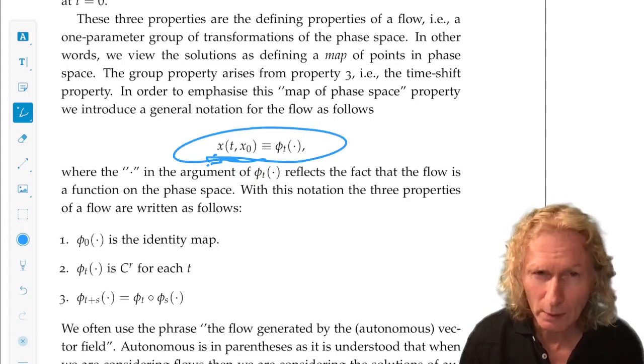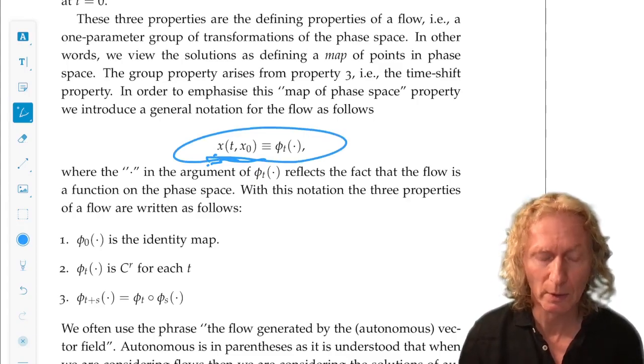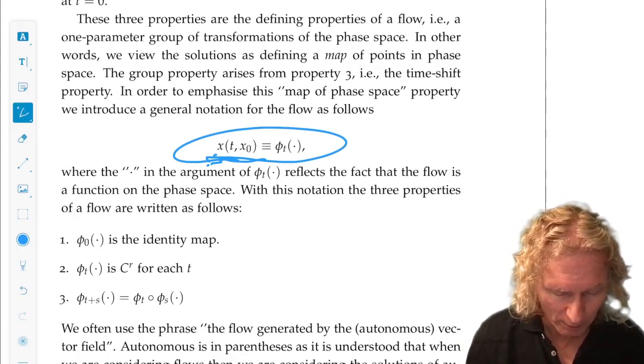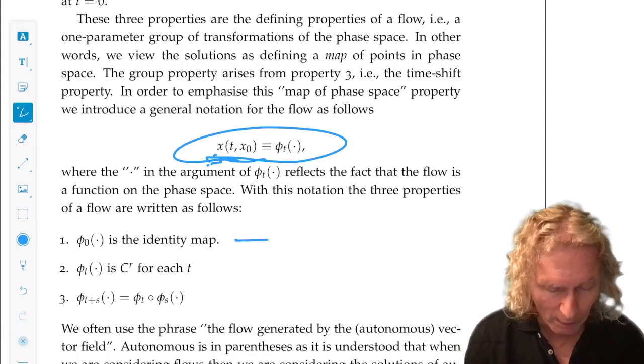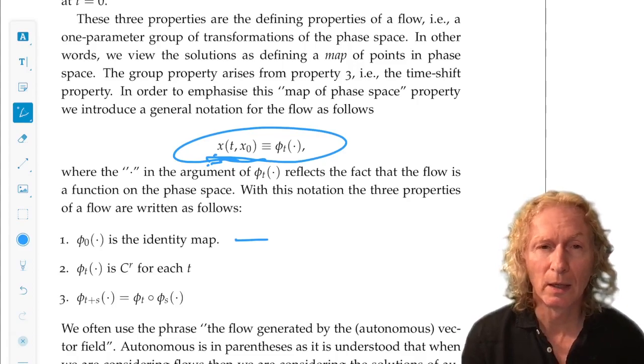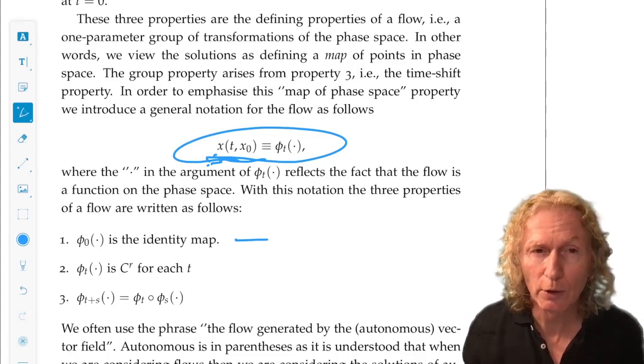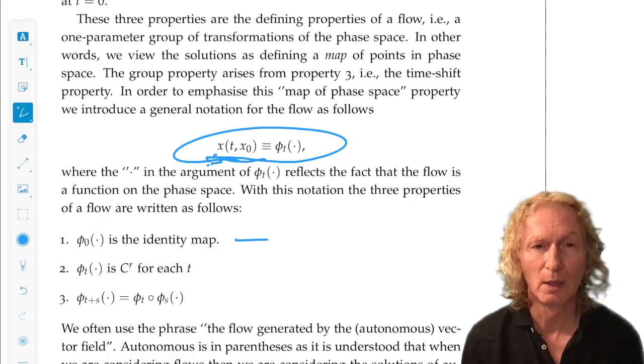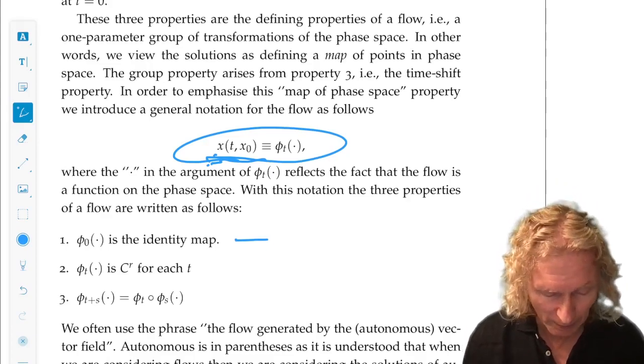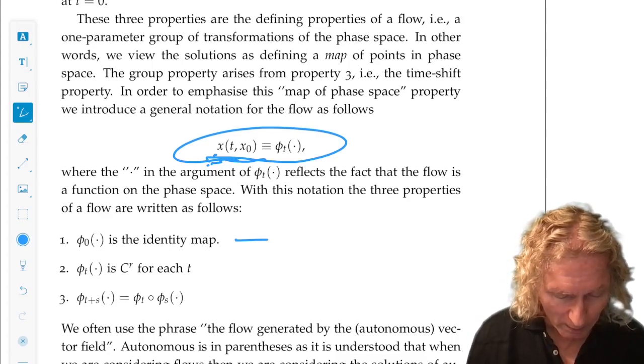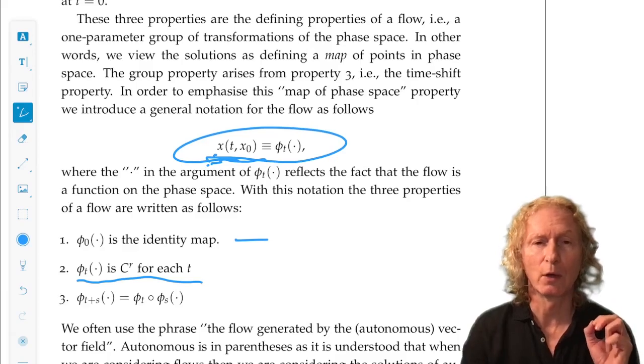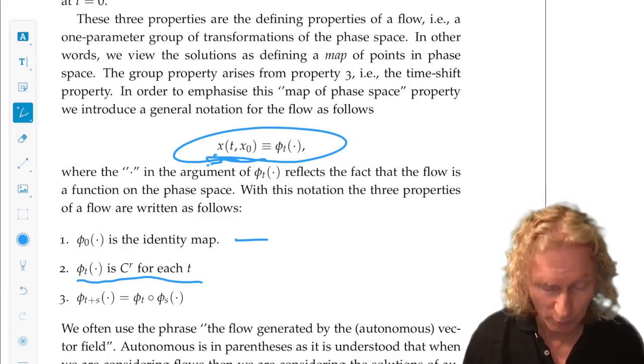So, now, if we rewrite the three properties on the previous page that I just derived, look at what we have. Phi at time 0 is just the identity map. It just returns what is the argument of this function. For each value of time, phi sub t is a C^r function of the argument.